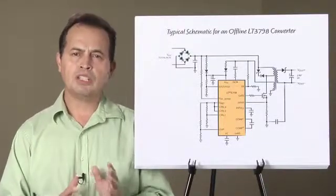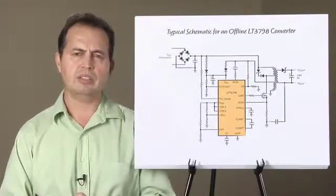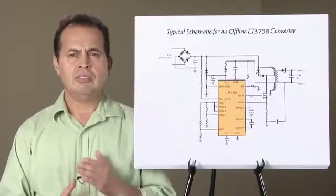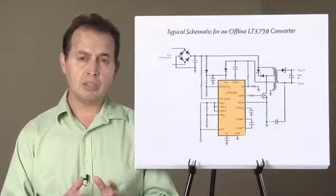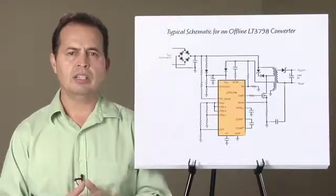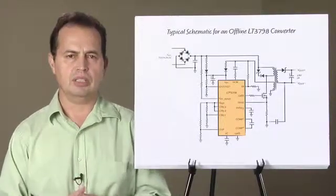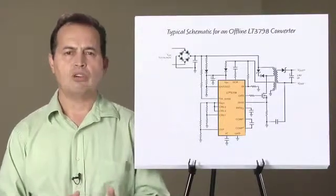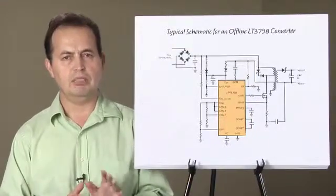This part can also regulate output current for LEDs or other constant current applications. In a flyback converter operating in boundary mode, the LT3798 relies on peak switch current, duty cycle, and turns ratio to infer the amount of current on the output side. The accuracy of the regulated voltage or current is typically within plus or minus 5%.